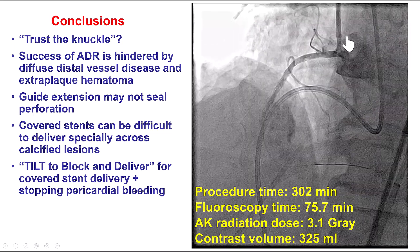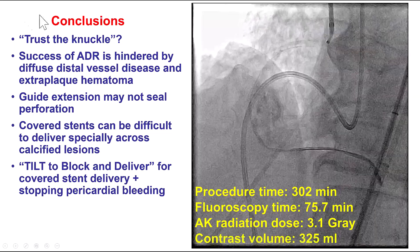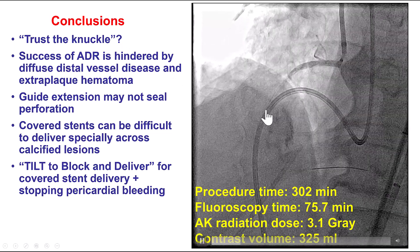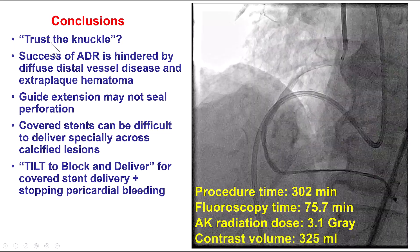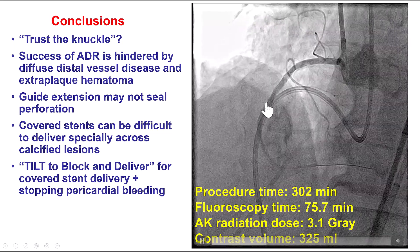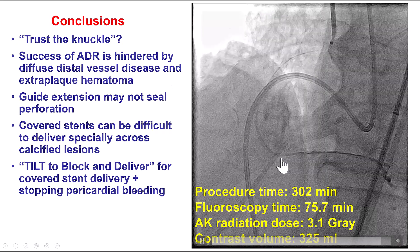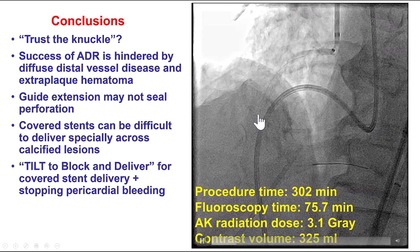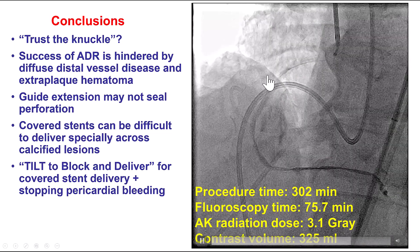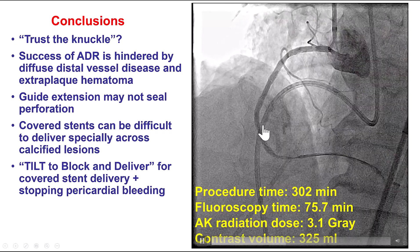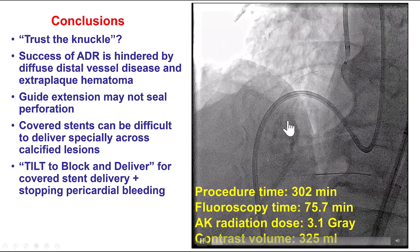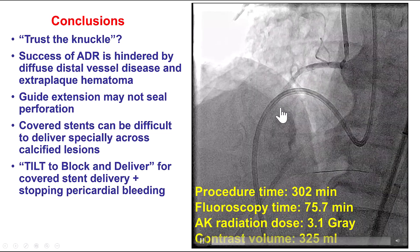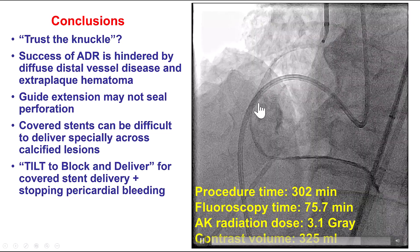There are several lessons from this case. First, even though the knuckle is safer than advancing non-knuckled guidewires, it is not 100% safe — in this case the knuckle likely entered a marginal branch and perforated it. Trust the knuckle, but verify. Second, re-entry was challenging due to diffuse distal disease, making re-entry from the extraplaque into the intraplaque space difficult. We assumed the guide extension would tamponade the perforation, but there was still extravasation. The lesson is: whenever there is a perforation, ensure there is no continued extravasation when using balloons or other techniques to block blood flow to that area.